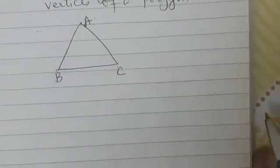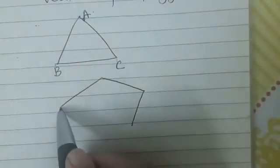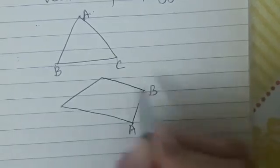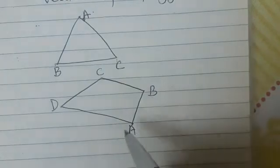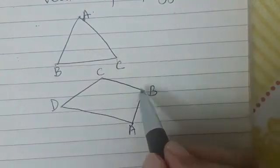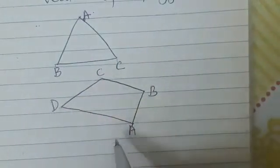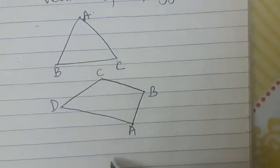Now let us draw a quadrilateral — a polygon having four sides. I have drawn a polygon with four sides and vertices A, B, C, D. These are the four sides. Now we will try to join line segments connecting two non-consecutive vertices.